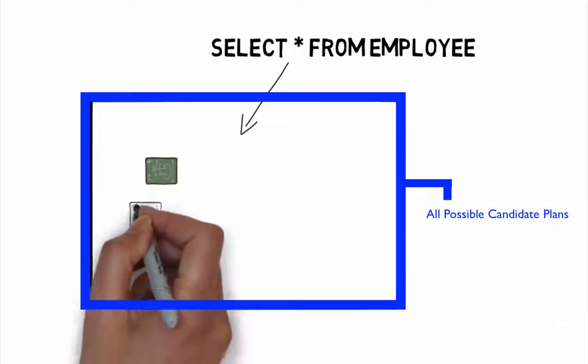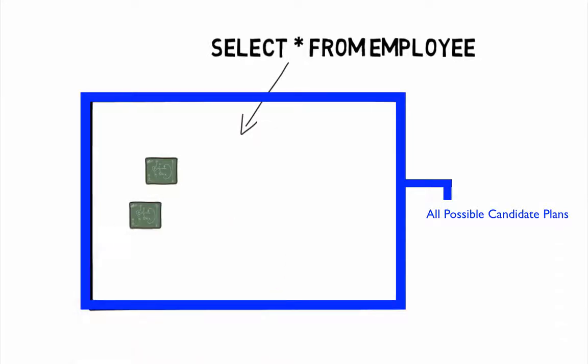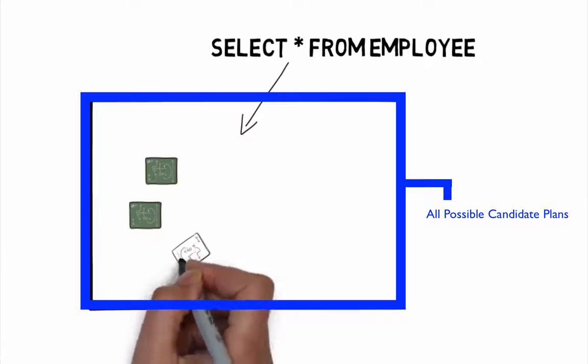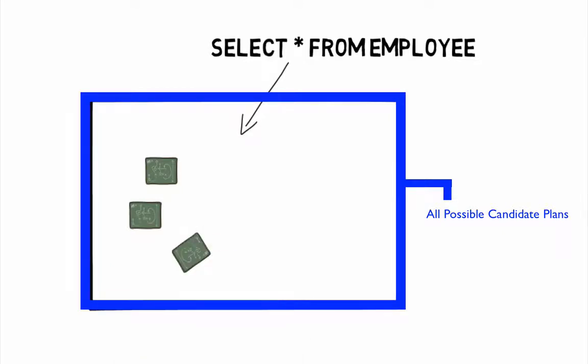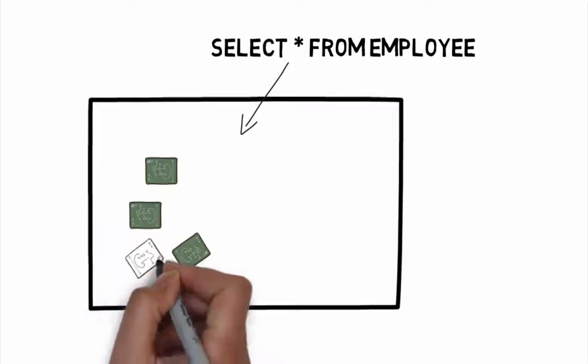We define a search space for a given query as a set of all the possible execution plans for that query. And any possible plan in the search space returns the same results.